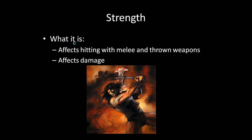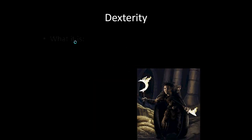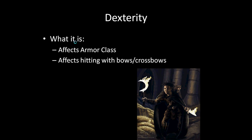Next up is Dexterity. Dexterity is basically how coordinated you are — your agility, your reflexes, your finger dexterity and manipulation. The first thing it does is affect your armor class, which is how hard you are to hit in the game. Obviously a higher dexterity is better if you don't want to get hit. The next thing it affects is hitting with bows and crossbows — not damage, only the to-hit roll, unless there's something special about the bow or crossbow.